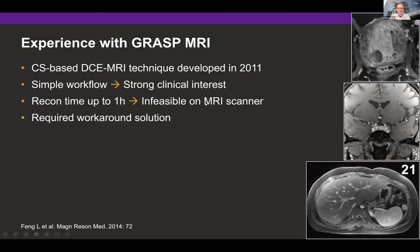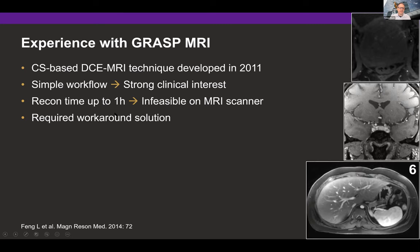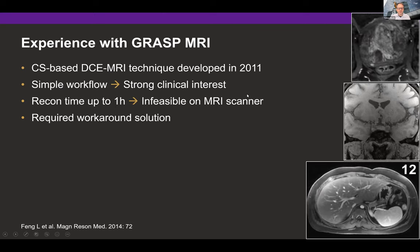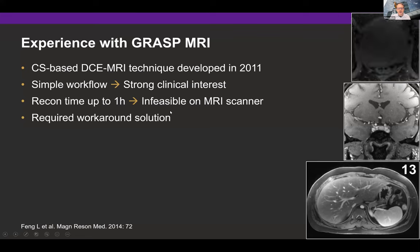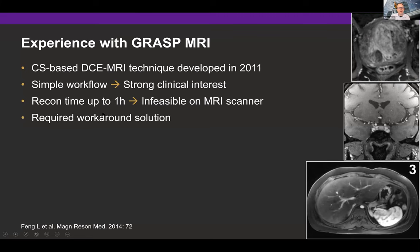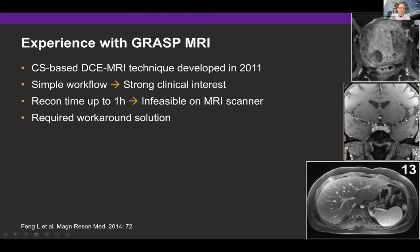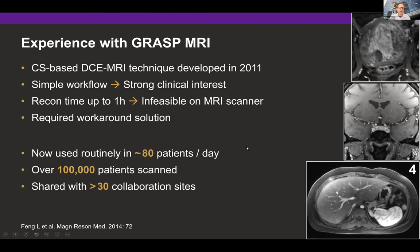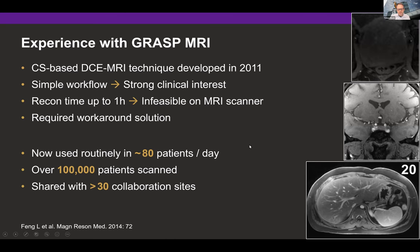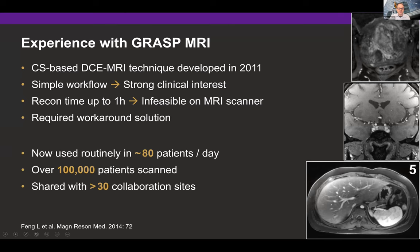In 2011 we developed a compressed sensing based reconstruction technique for dynamic contrast enhanced MRI called GRASP. GRASP makes the clinical workflow quite easy from the acquisition point of view, so there was strong clinical interest in it. However, these compressed sensing reconstructions can take up to one hour, making it infeasible to run directly on the MRI scanner. We had to develop a solution for offline reconstruction in clinical practice. Using the pipeline we developed, we are now able to perform about 80 patient scans every day, and in total we have performed well over 100,000 patient scans using this technique.